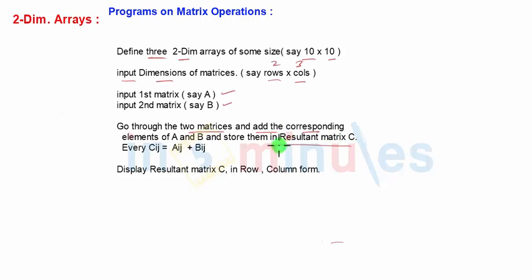Then we will go through the two matrices and add the corresponding elements of A and B and store them into resultant matrix C. The formula we will be using is C ij equal to A ij plus B ij. Then we will display the matrix C in row column format. So that will be the overall programming.